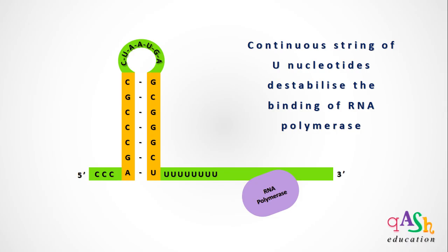The hairpin loop structure is followed by a string of U-nucleotides. These U-nucleotide strings destabilize the binding of RNA polymerase on the mRNA template.